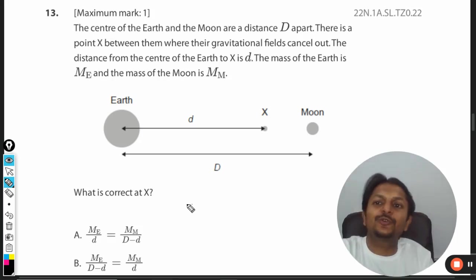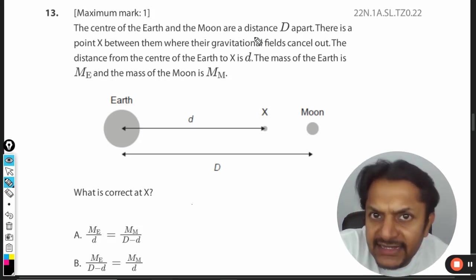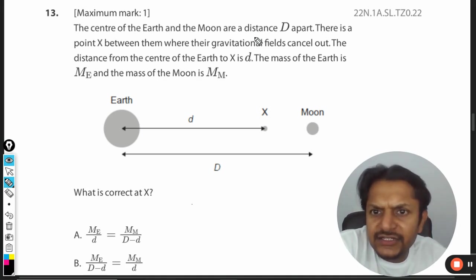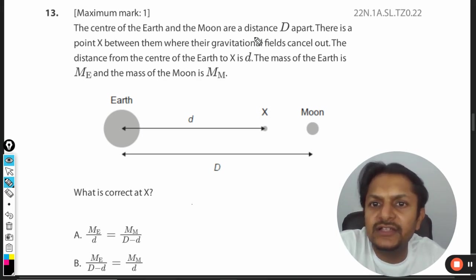Let's see what is there in this question. The center of the Earth and the Moon are a distance D apart. There is a point X between them where the gravitational fields cancel each other out. The distance from the center of the Earth is small d.